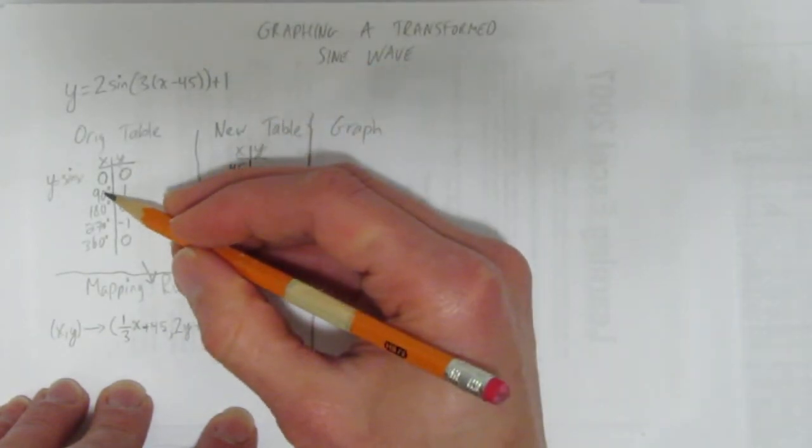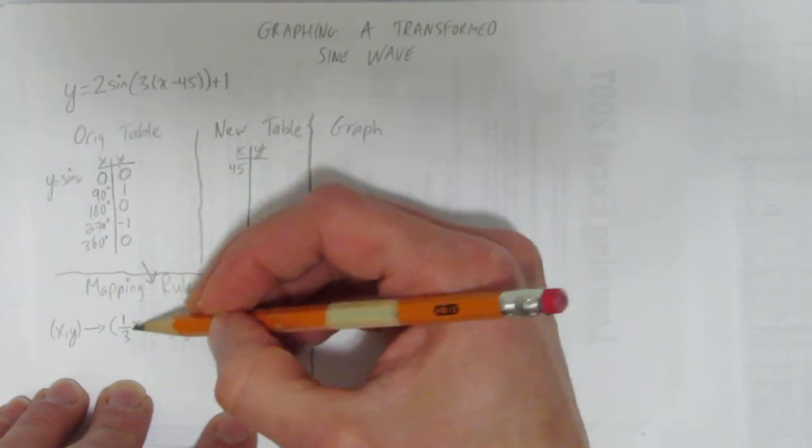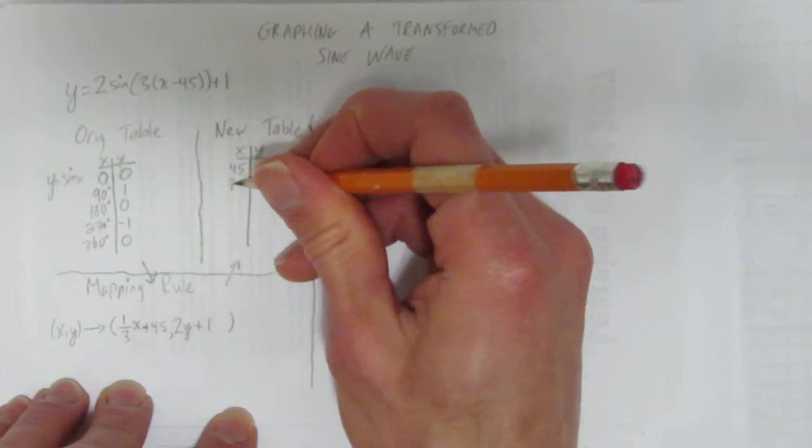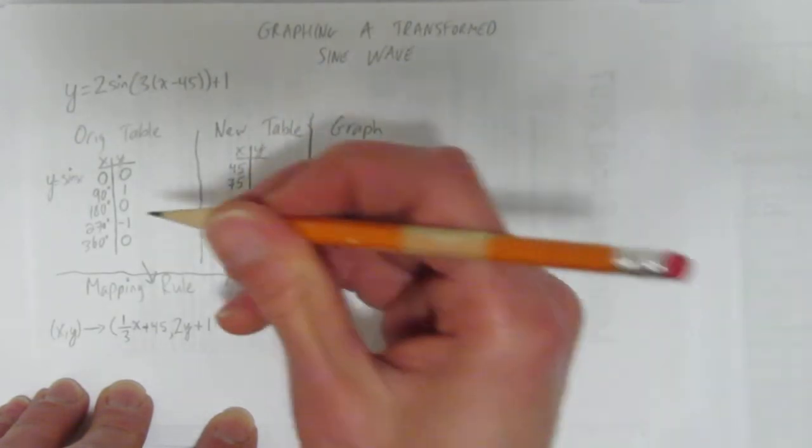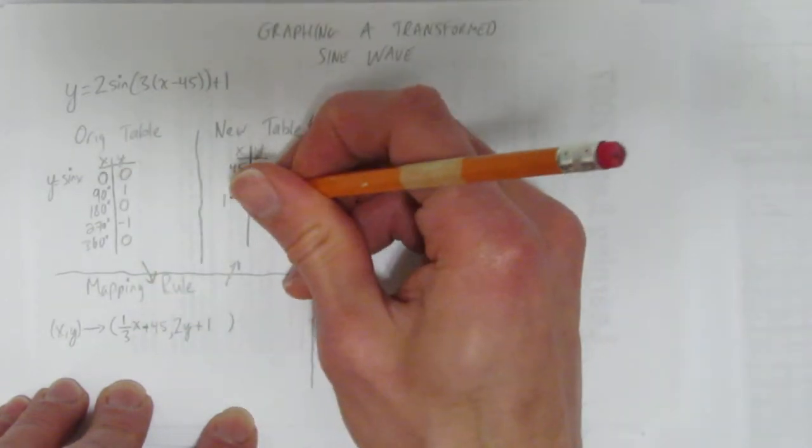Let's take 90. What's one third of 90? 90 divided by 3, that's just 30. 30 plus 45, you get 75. 180 divided by 3, that's 60. 60 plus 45, 105.